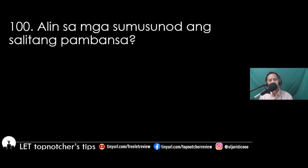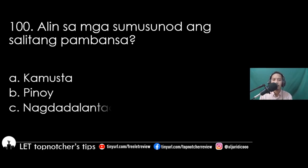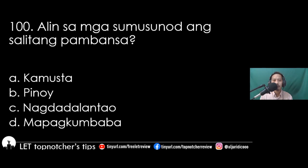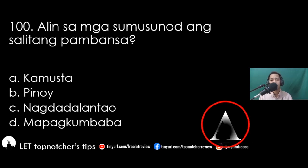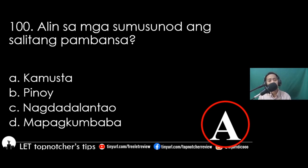Item 100 (Filipino): Alin sa mga sumusunod ang salitang pambansa? A) kamusta, B) Pinoy, C) nagdadalan tao, D) mapagpakumbaba. Ang tamang sagot ay A, kamusta. Ang salitang pambansa ay mga salitang ginagamit sa mga aklat. Hindi 'Pinoy' ang sagot dahil ang ginagamit sa aklat ay 'Pilipino,' hindi 'Pinoy.' Ang 'Pinoy' ay pinaikling salita lamang. Ang 'kamusta' ay maaaring makita sa mga aklat.